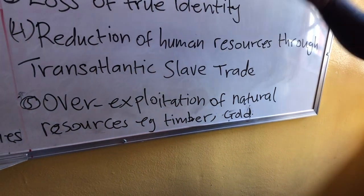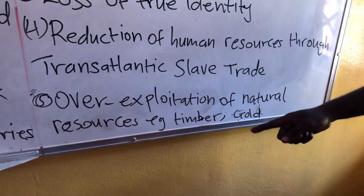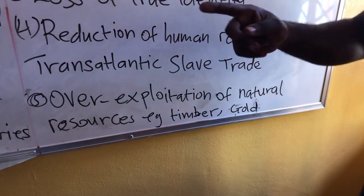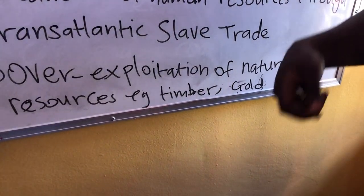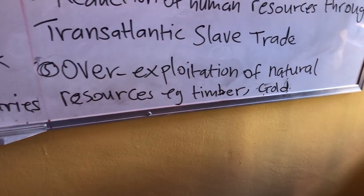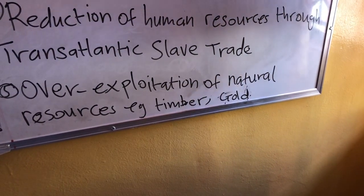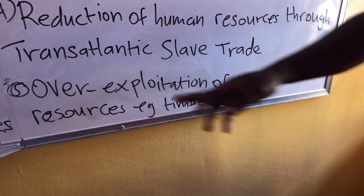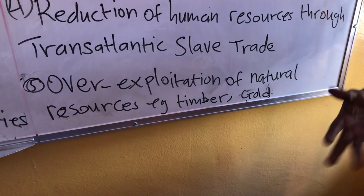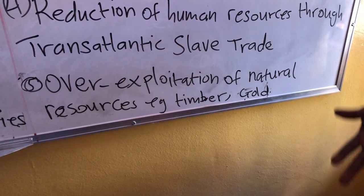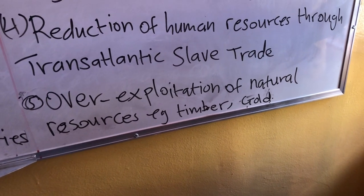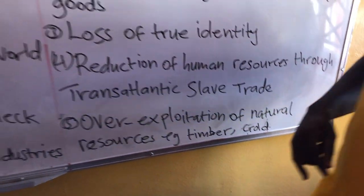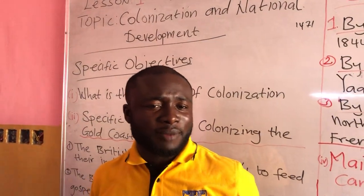The last negative effect is the over-exploitation of natural resources — for example, timber and gold. Colonization has led to over-exploitation of our natural resources. One reason the British wanted to colonize the Gold Coast was that they needed raw materials to feed their industries, and that becomes a negative effect. Now timber is scarce in this country, and a time will come when it will be very difficult to get access to gold. I hope you have enjoyed the lesson. We'll end it here. Ready to meet you in the next video. Bye-bye.